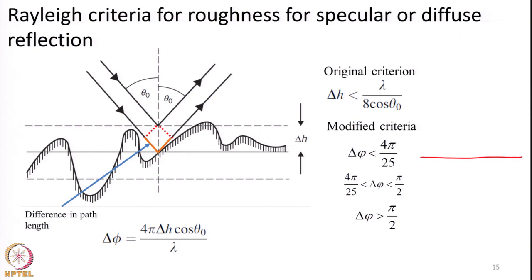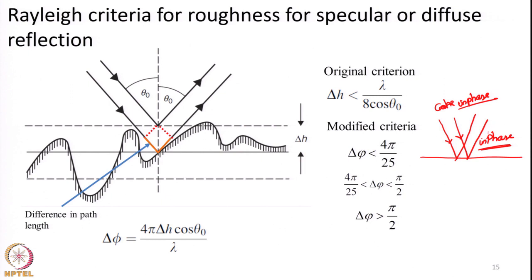Let us say there is a really smooth surface. Two beams of radiation — let us assume they are in phase — parallel beams of radiation coming and falling on it. If the surface is really smooth, both will be reflected obeying Snell's law, and the in-phase nature will still be maintained even after reflection. Because they travelled parallely, they got reflected at almost the same instant, the surface is really smooth, so not much difference would have occurred. They would have continued parallely without any change in phase.